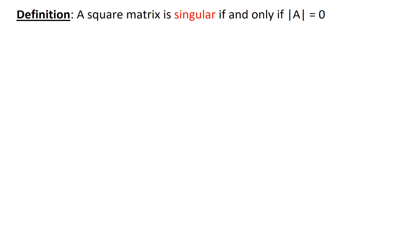Hello, in this video we're going to look at singular matrices. So begin with the definition. A square matrix is singular if and only if the determinant of A equals 0.